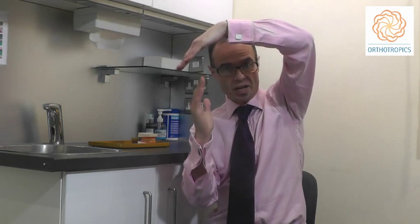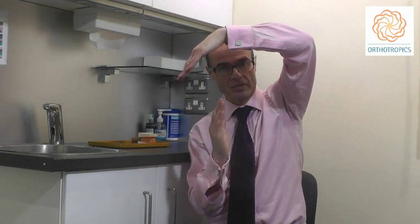Class 2, Division 2. This is less common than Class 2, Division 1. In this situation, as the jaws drop down and the dental arches become unrelated — with the lower dental arch being set back from the upper dental arch — if the upper front teeth are retroclined, which means tipped backwards, this is defined as a Class 2, Division 2.